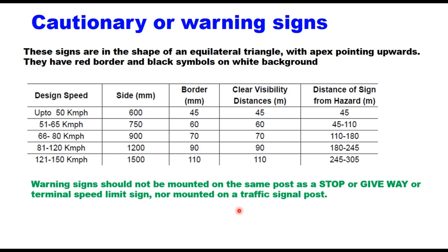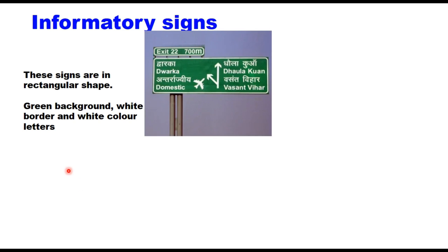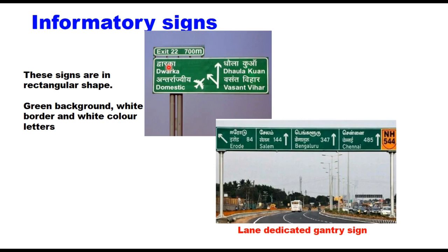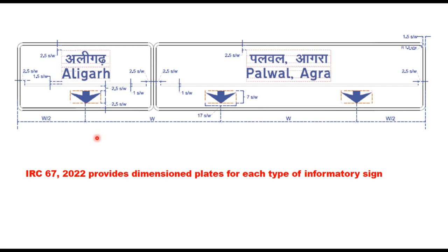Information signs provide information to road users regarding their location, facilities available in the vicinity, or about the destination. These signs are rectangular in shape with green background, white border and white color letters. They may be a lane dedicated gantry sign or a directional sign. IRC 67 2022 provides dimensioned plates for each type of informatory sign — whether it is a lane dedicated sign, directional sign, destination sign, or any other information sign.